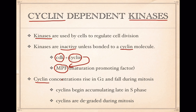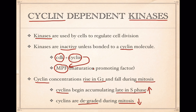Cyclins are called cyclins because they're proteins whose concentrations change during the cell cycle. During the G2 phase, the cyclin concentration in the cytoplasm rises, and during the mitosis phase, the concentration of cyclins falls. Cyclins accumulate late in the S phase and are degraded during mitosis. Since cyclins are needed to bond with kinases to promote cell division, the cyclins are what control cell division — they're the timing mechanism.